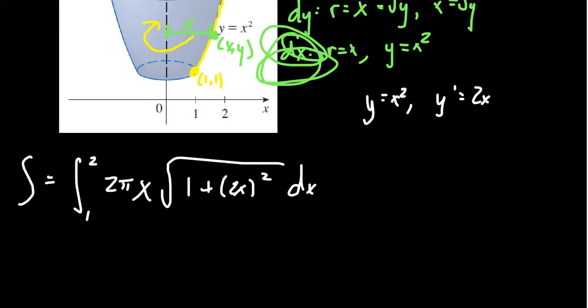So we're going to get 4. Got a little ahead of myself there. 2x squared dx. If we square the 2x, we're going to get 4x. From 1 to 2, 2πx square root of 1 plus 4x squared dx.